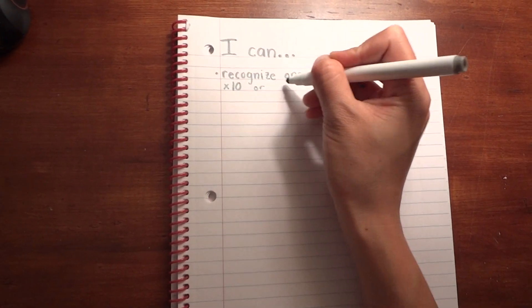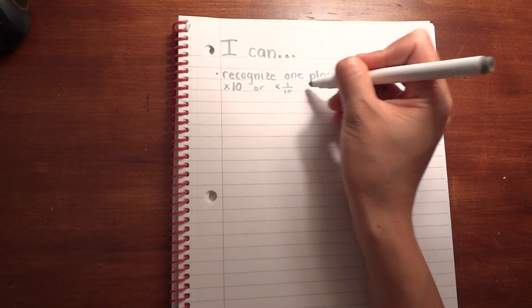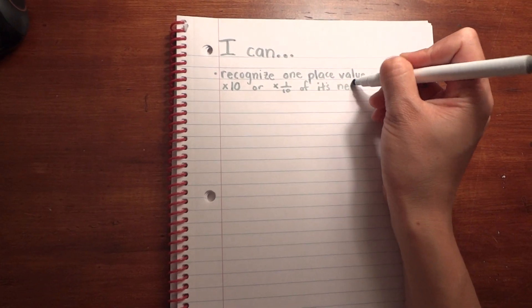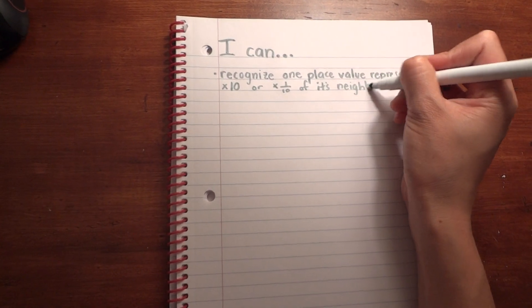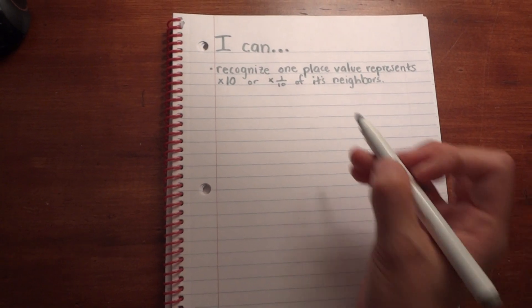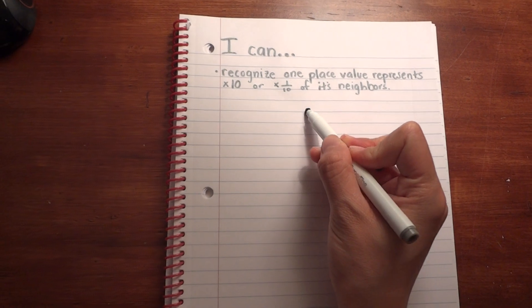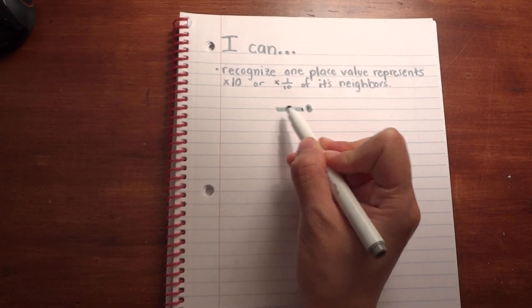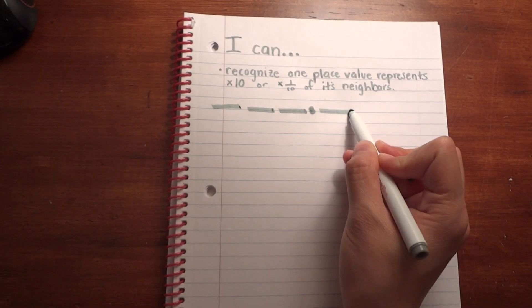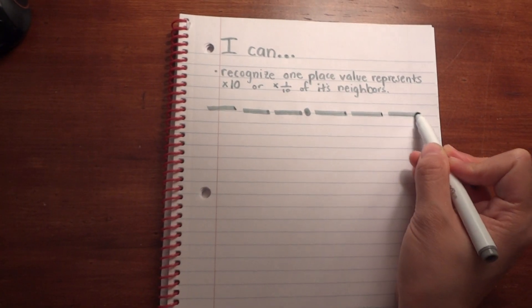...ten times or one-tenth of its neighbors. Okay, so before we go into the I can statement, let's go ahead and draw a quick little place value chart. We have our ones, decimal, hundreds, thousands, tenths, hundredths, and thousandths we can use as a reference.